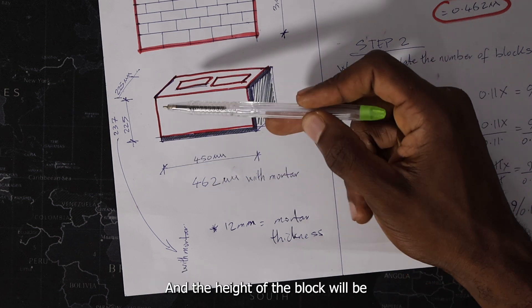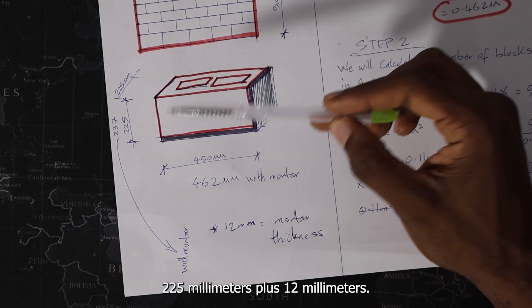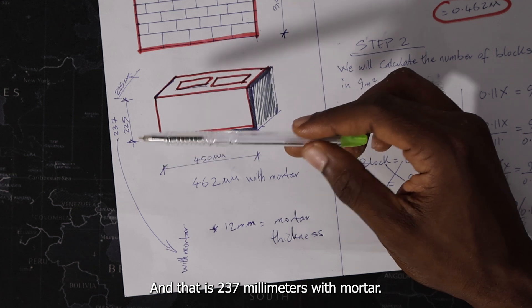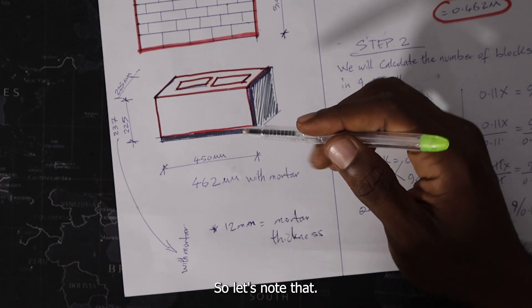And the height of the block will be 225 millimeters plus 12 millimeters. That is 237 millimeters with mortar. So let's note that.